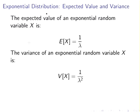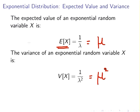Two important formulas: the expected value of the random variable X is one over lambda, which I referred to earlier as mu. The variance of an exponential random variable is one over lambda squared, which is equivalently mu squared or the expected value of X squared. These are quite easy to remember.